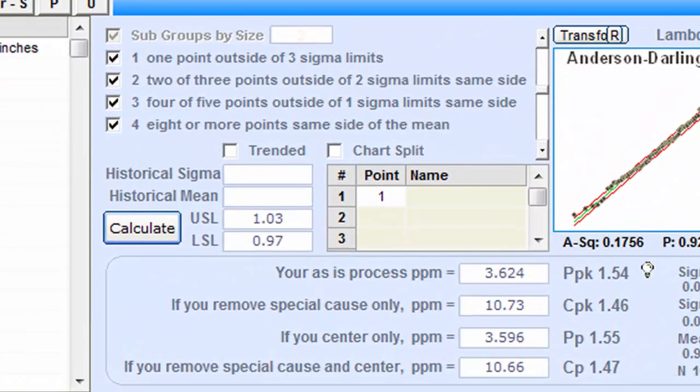Our upper limit is 1 inch plus 30 thousandths of an inch or 1.03 inches, and our lower limit is 1 inch minus 30 thousandths or 0.97 inches. Entering the limits triggers calculations of PPK, CPK, P sub P and C sub P, and once again you can learn much about these four indices at our website.